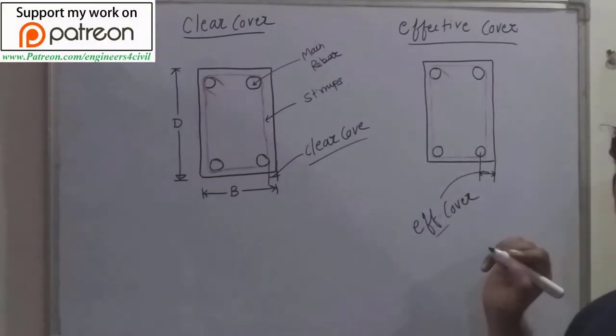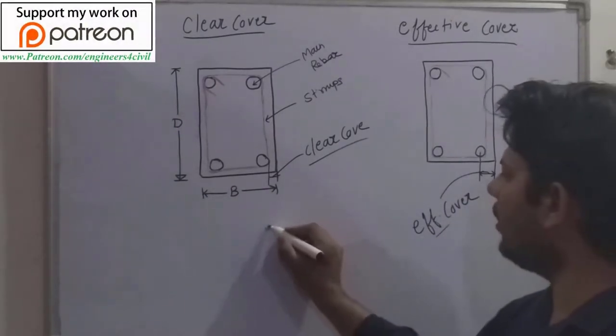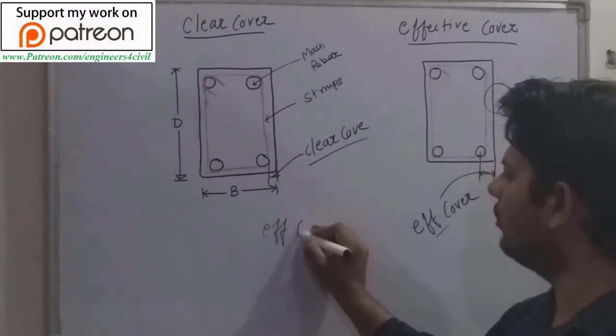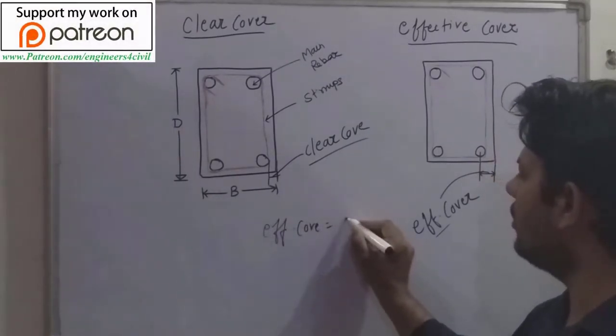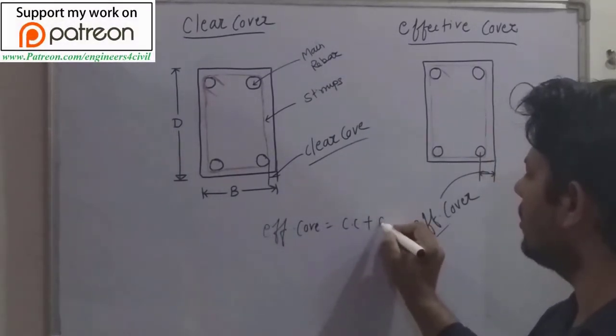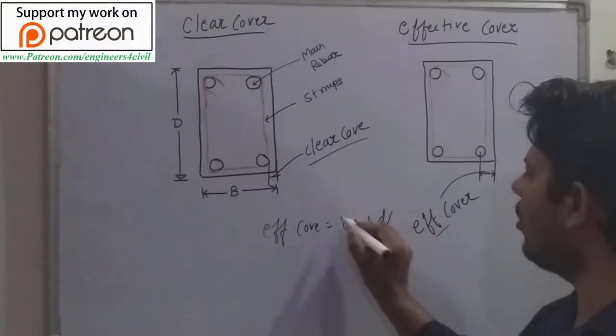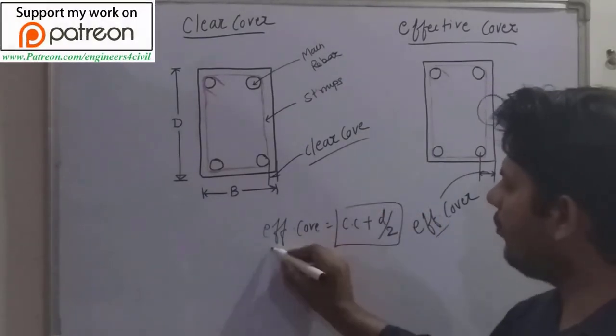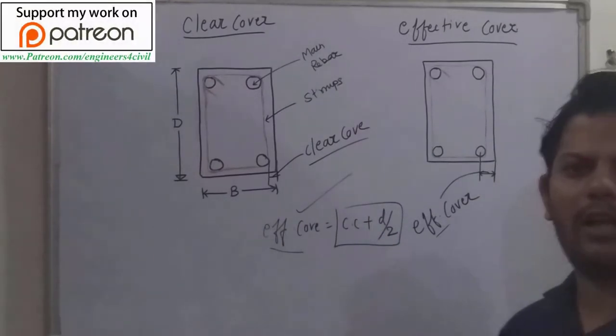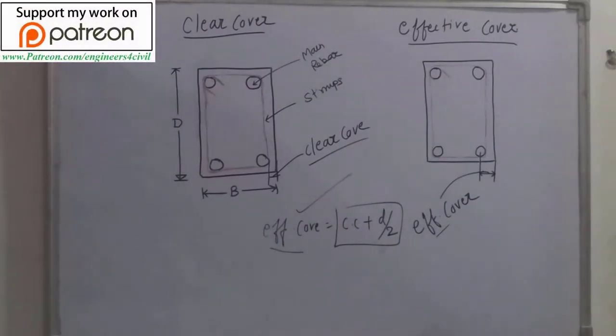This is the difference. If you want to calculate effective cover, this is clear cover plus half of the diameter of reinforcement. Effective cover we use for calculation in the design.